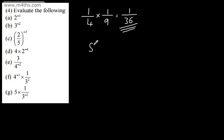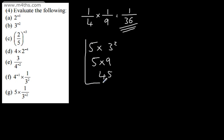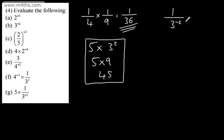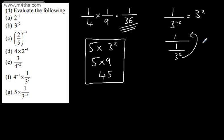The next one: we can write this as 5 times 3 to the positive 2. 5 times 3 to the positive 2 is 5 times 9. 5 times 9 is going to give us 45. 1 over 3 to the negative 2 is the same as writing 3 to the positive 2, because it's 1 over 1 over 3 squared, which means 3 squared would be in the numerator.